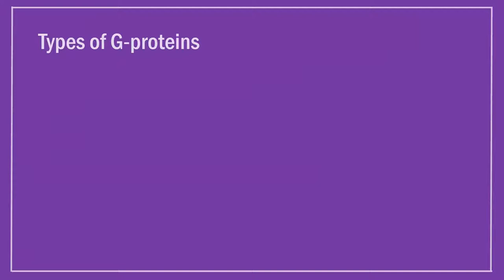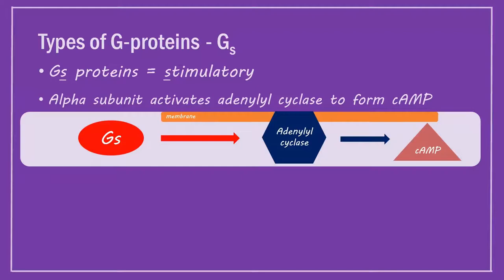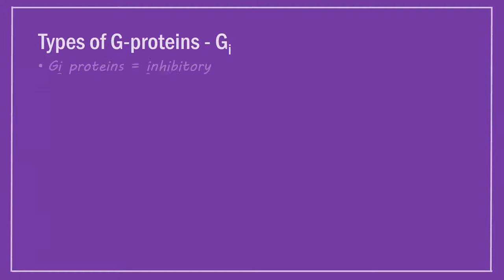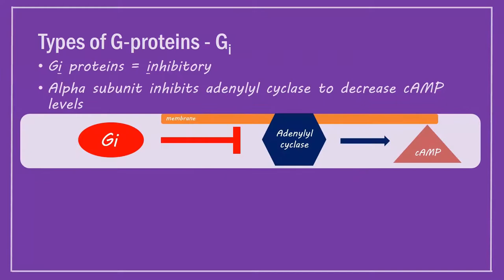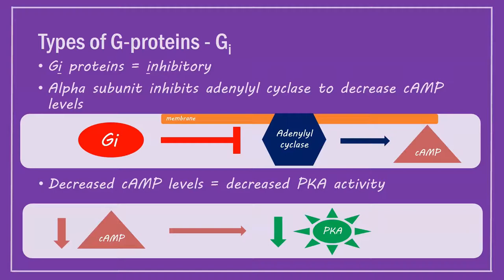Types of G-proteins. There are four types of G-protein. Gs proteins are stimulatory. The alpha subunit activates adenyl cyclase to form cAMP, which in turn activates protein kinase A. Gi proteins are inhibitory. Their activation results in inhibition of adenyl cyclase, decreasing cAMP levels, so decreasing PKA activity.